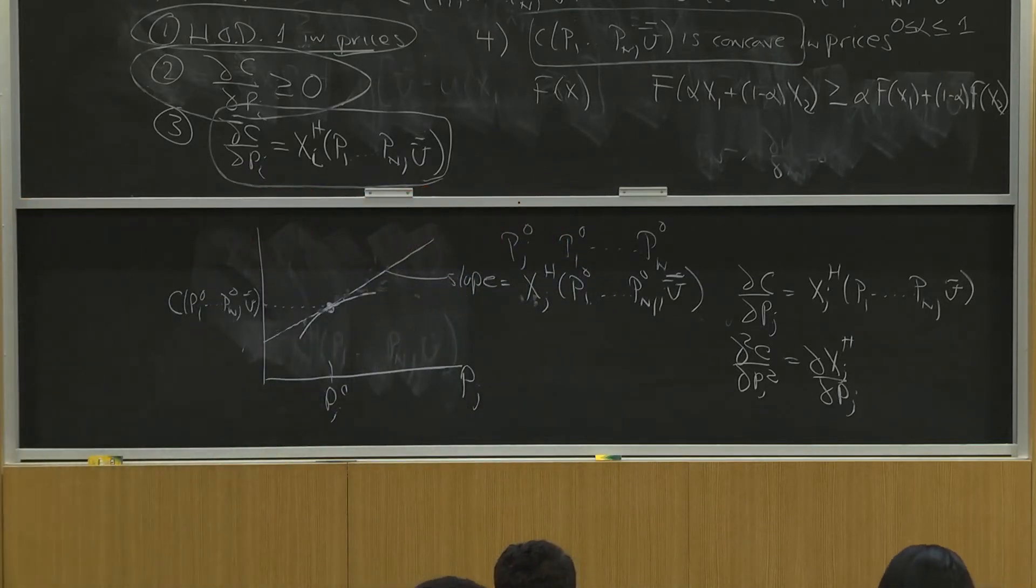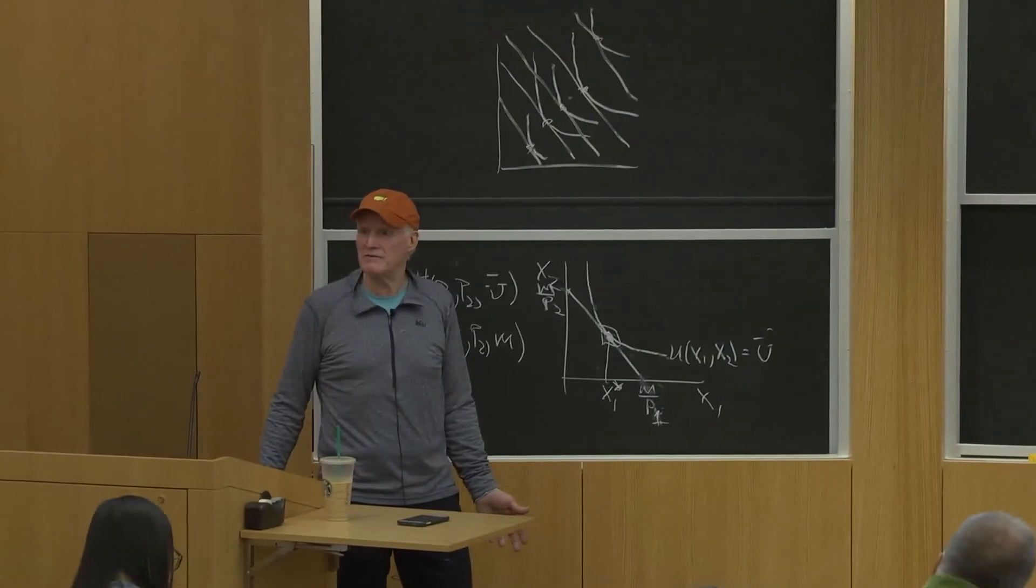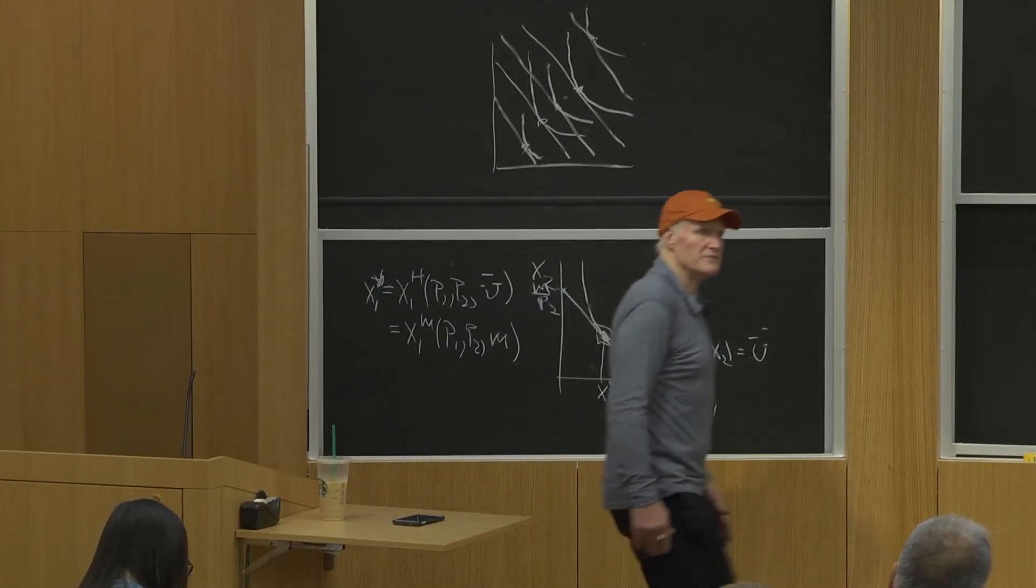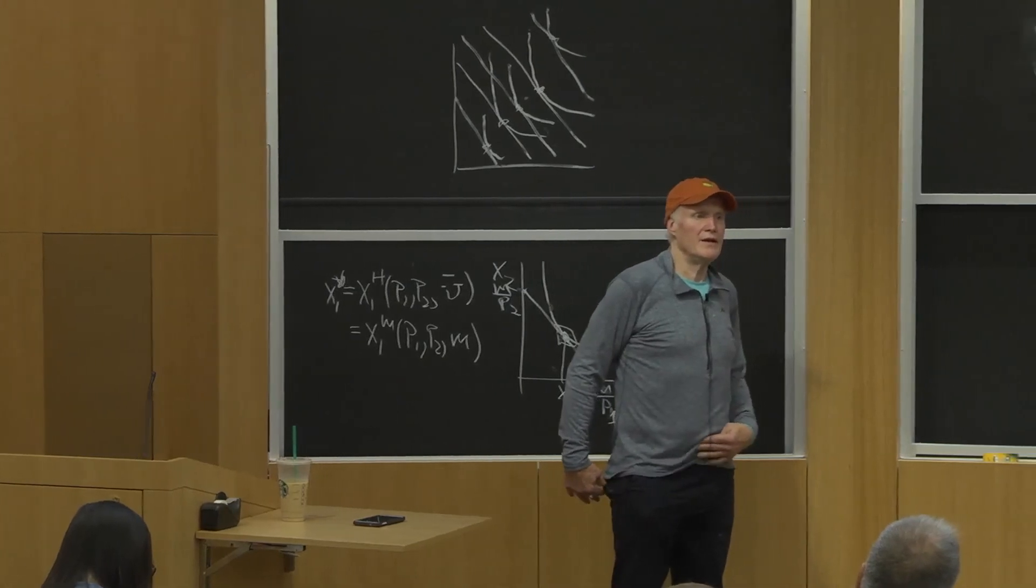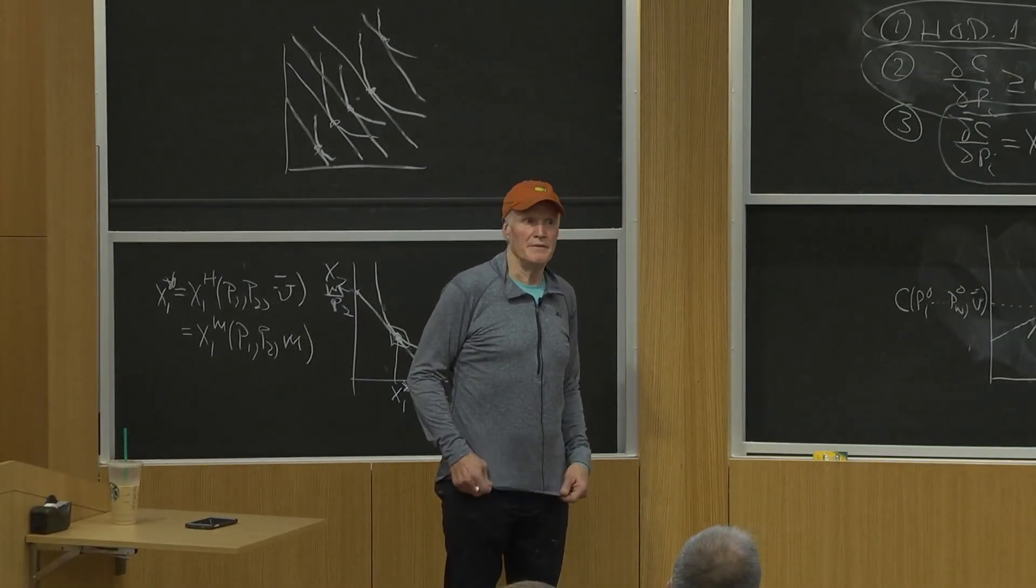If the quantity ain't getting lower, the slope ain't getting lower. Right? It's not like some magic of mathematics. It's necessary by the economics. Any questions about that? People understand how that...